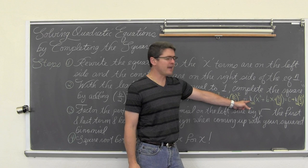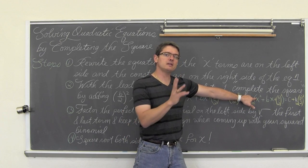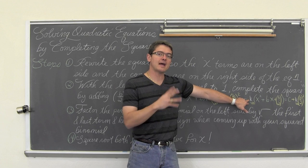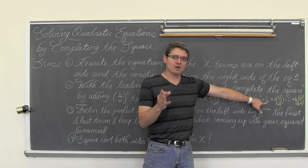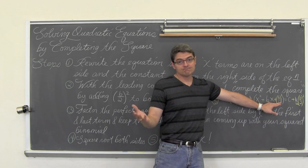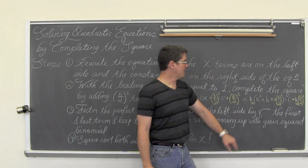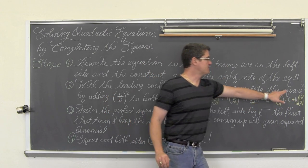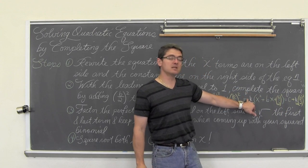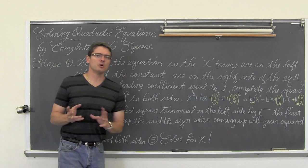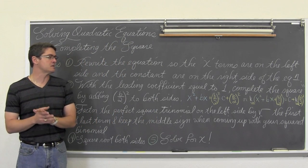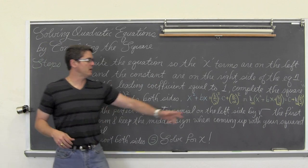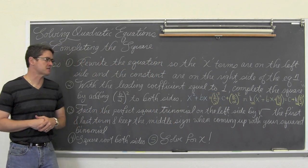If you are just doing Algebra 2 and learning how to solve equations, you might be better off dividing everything in the equation by the leading coefficient rather than using the factored form. The factored notation is more for pre-calculus or the end of Algebra 2 when graphing conic sections.